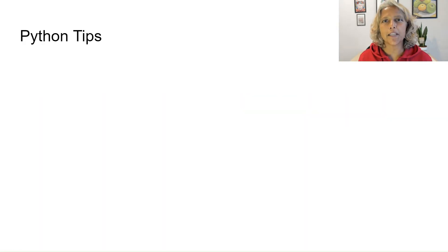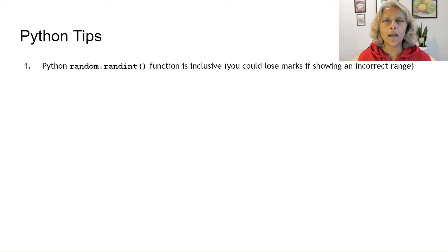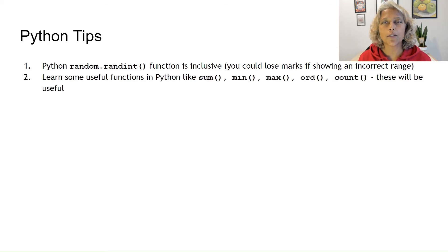Here are some Python tips. In Python, random.randint function is inclusive, and you could lose marks if you show an incorrect range. I would also suggest learning some useful functions in Python, like sum, min, max, odd, and count. They could be useful.